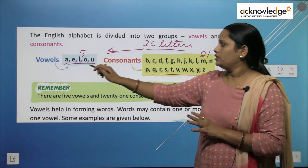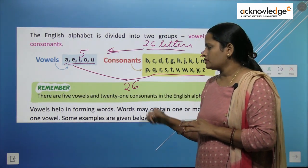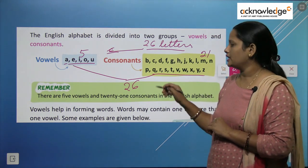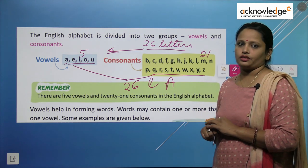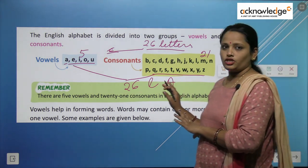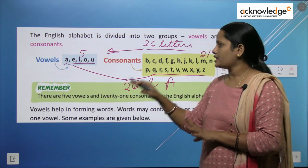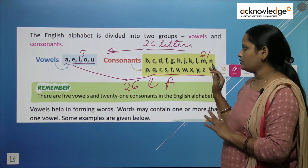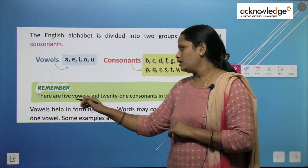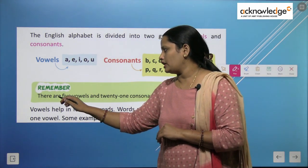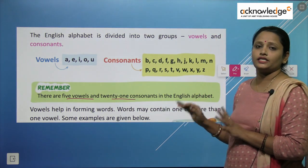So the combination of vowels and consonants together brings the 26 letters of the English alphabet. From these 26 letters, 5 are the vowels — A, E, I, O, U — and the rest, 21, are the consonants. So remember: there are 5 vowels and 21 consonants in the English alphabet.